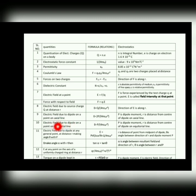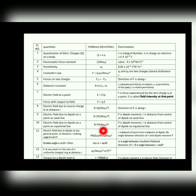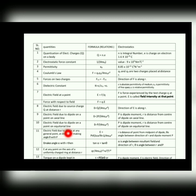Next, electric field due to a dipole on a point on the axial line. In chapter 1 we studied two important cases — axial and equatorial lines. For the axial line, the formula is 2p/(4πε₀r³), or in magnitude: 2kp/r³. For the equatorial line, the magnitude is E = kp/r³, which equals p/(4πε₀r³). The relation between them: E_axial = 2 × E_equatorial. Remember this for the exam.